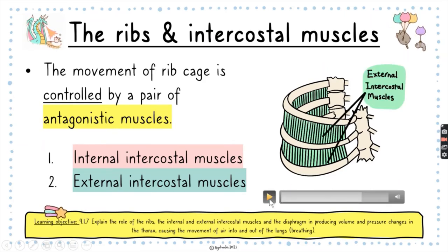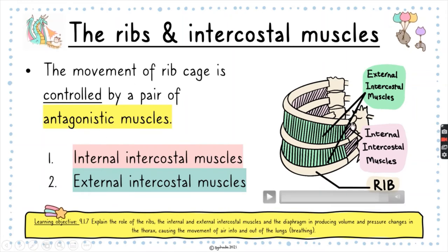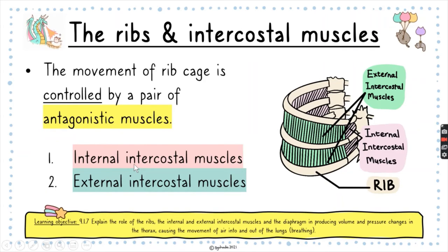At each rib, you have the internal intercostal muscles on the inner part and the external intercostal muscles on the outer part. They work antagonistically: if the external intercostal muscles contract, the internal ones relax, and vice versa. All you need to know is what one is doing, and the other is doing the opposite.